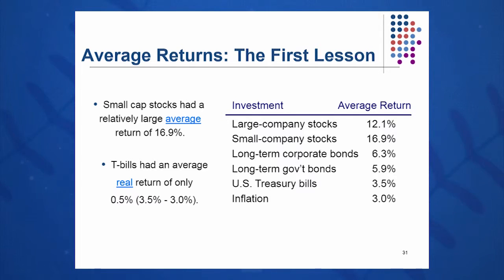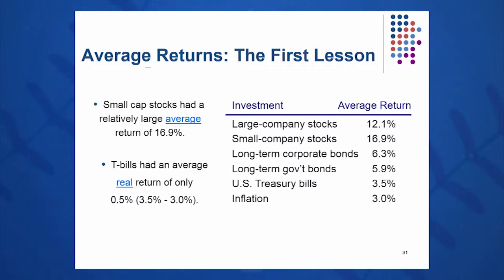Bonds basically get you 6%. Whether you invest in corporate bonds or government bonds, long-term corporates have averaged 6.3% over the last 85 to 90 years. And long-term government bonds, similarly about 6% — 5.9% has been their average return.